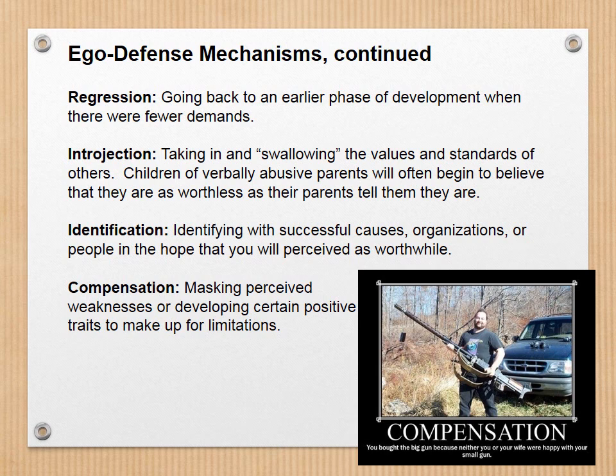Compensation — part of Adlerian theory — is masking perceived weaknesses or developing certain positive traits to make up for limitations. The joke here is that someone bought the big gun because neither they nor their partner were happy with their small one — gun being used metaphorically for a body part. A lot of people look at a guy's ridiculously expensive car and say he's making up for some lacking attribute. Women compensate too — a woman who feels she lacks certain physical attributes a man might desire might compensate by becoming especially funny, dyeing her hair, or getting implants.